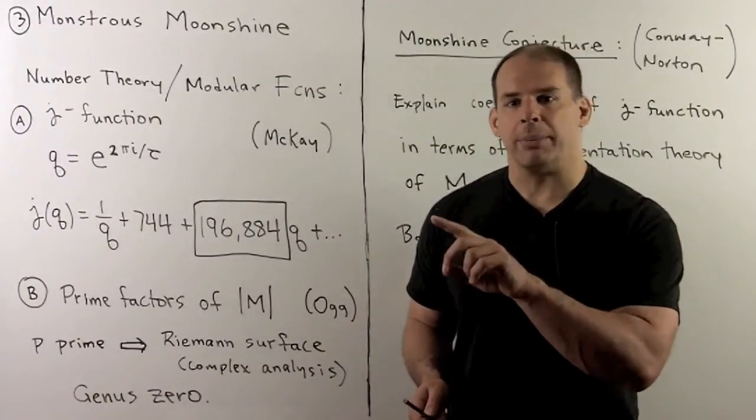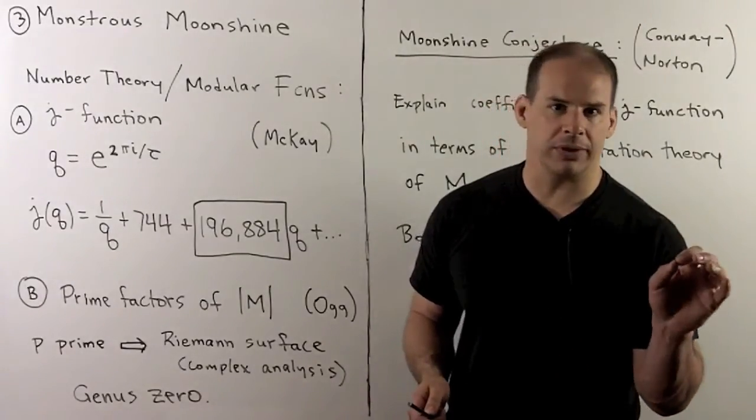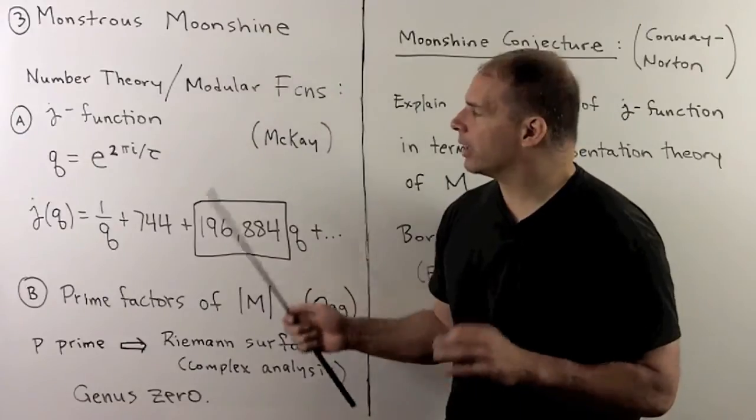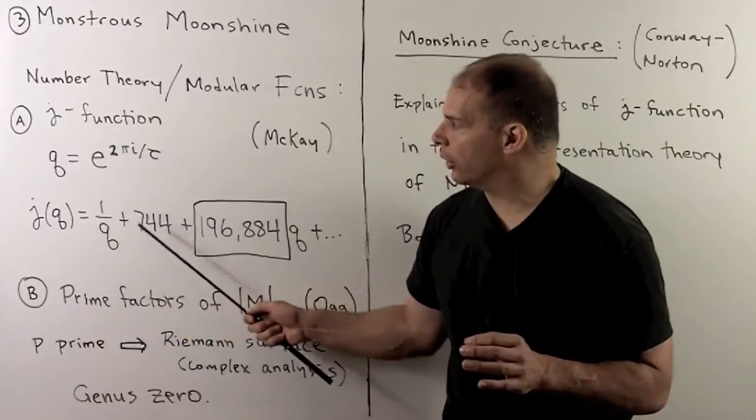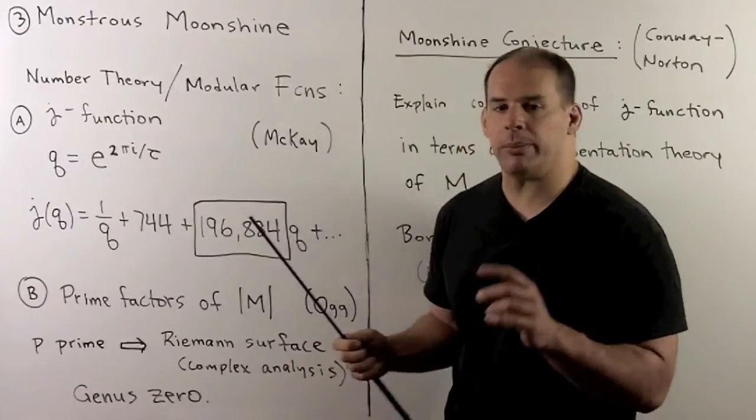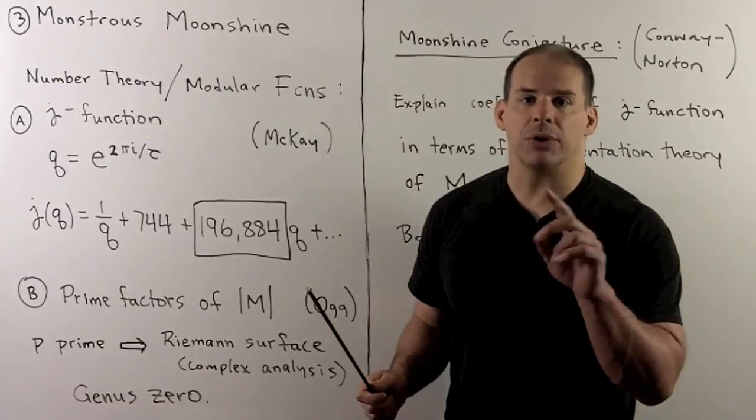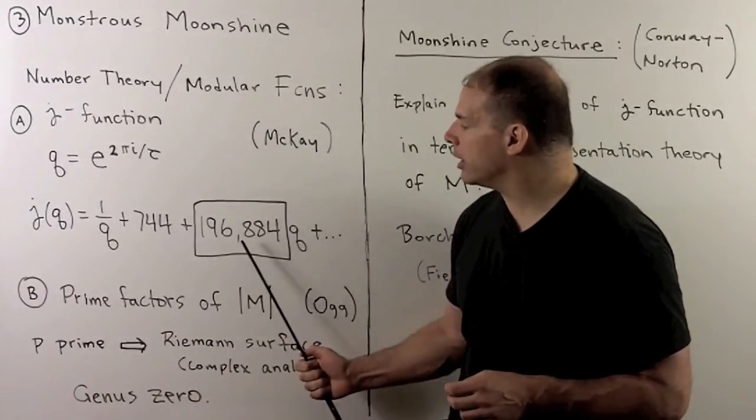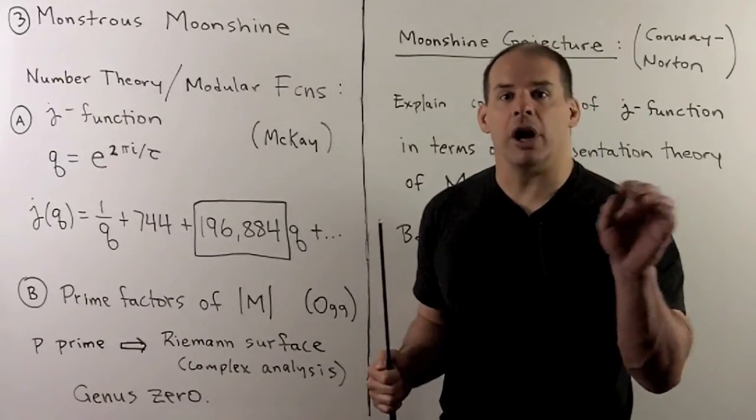Now, what happened as the theory of the monster group developed? They noticed some of the numbers coming out of it were important for number theory. For instance, in number theory, we have these gadgets called modular functions, and in particular, the J function. So if we expand the J function as a Laurent series in Q, when we go past the constant term, the coefficients are going to be related to the dimensions of the irreducible representations of the monster. So, for instance, from the previous board, we saw 196,883. So this is just this number plus one. And as we go further out, these dimensions are going to keep recurring as sums.